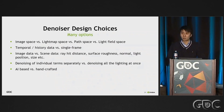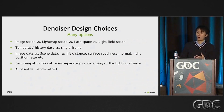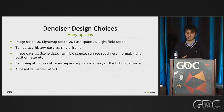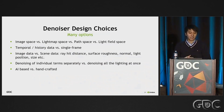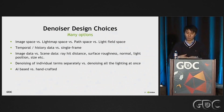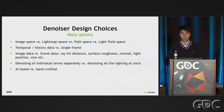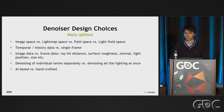After looking at all those requirements, we can think about our design options for a denoiser. First, we can choose between applying the filter in different spaces — the simplest is screen space, but people have also done it in light map space, path space, and light view space. And we can choose to only rely on data from the current frame, or borrow data from history frames to either increase the effective sample count or improve temporal stability and reduce flickering.